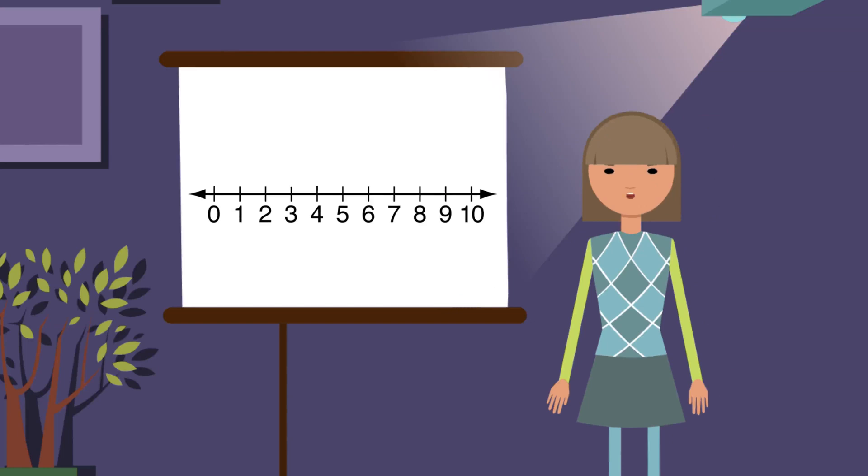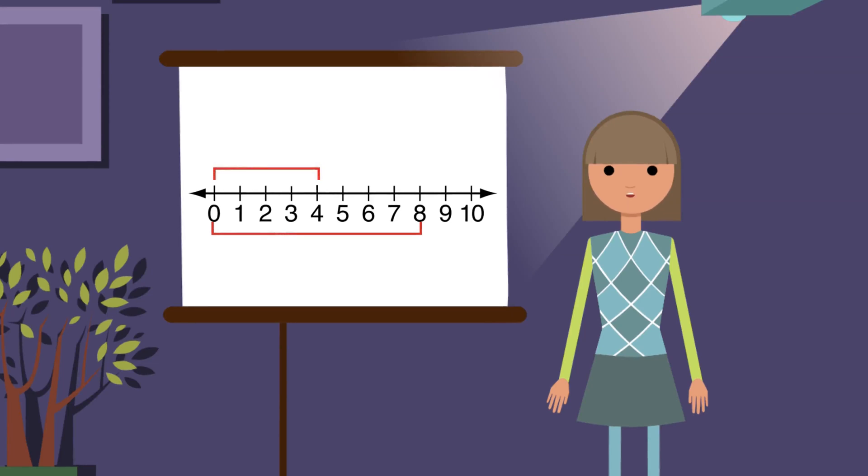Now compare the lengths of the lines. Which is bigger? You got it! The line from 0 to 8 is longer than the line from 0 to 4. This shows that 8 is bigger or worth more than 4.